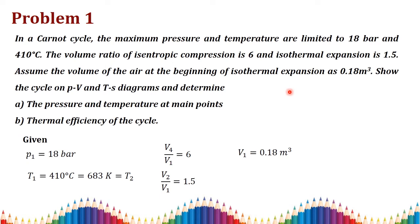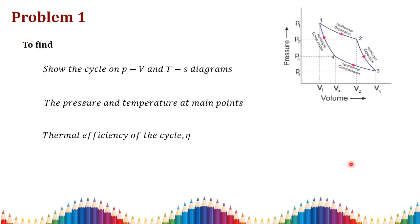We need to draw the Carnot cycle PV and TS diagrams and determine the pressure and temperature at all points, as well as the thermal efficiency of the cycle. Process 1 to 2 is isothermal expansion, process 2 to 3 is isentropic expansion, process 3 to 4 is isothermal compression, and process 4 to 1 is isentropic compression.